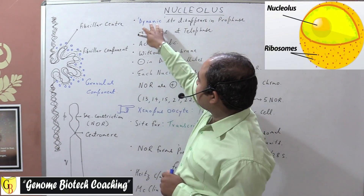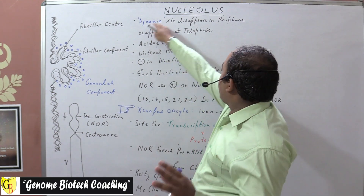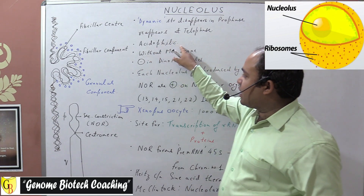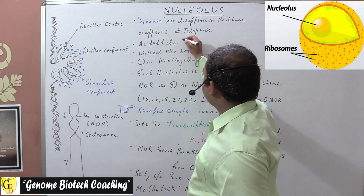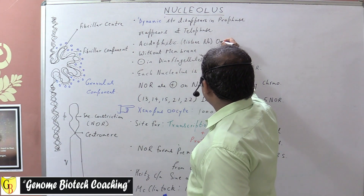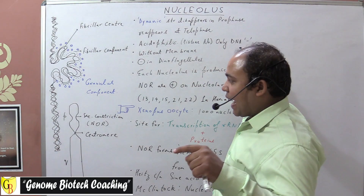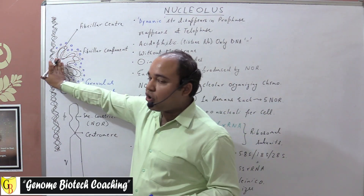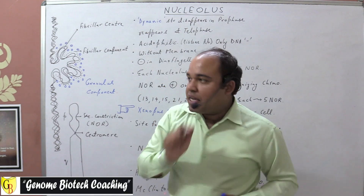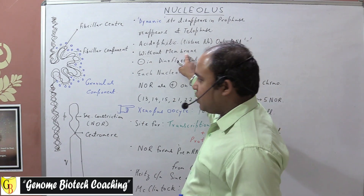Nucleolus is completely a dynamic structure. As the name indicates, it is dynamic — it disappears in the prophase of cell division and reappears in the telophase stage. It is acidophilic in nature because the basic histone proteins are absent. When histone proteins are absent and only DNA is present — DNA which is negatively charged, being deoxyribonucleic acid — this is why it is acidophilic. It is a membrane-less organelle present within the nucleus.